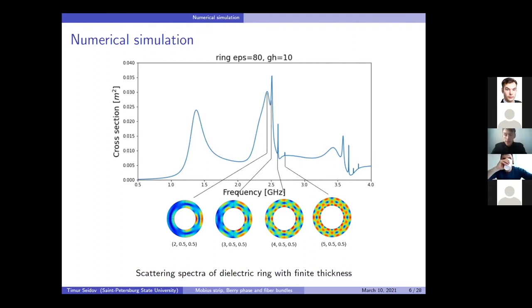On the slide, you can see an example of such calculation. The scattering spectrum of dielectric ring, which is the same as the Möbius strip with the zero twists. The spectrum consists of sequential galleries. Namely, this is the first gallery, this is the second and so forth.